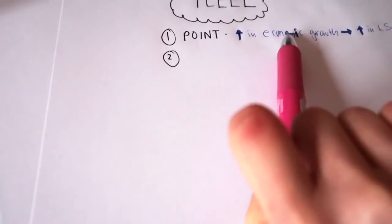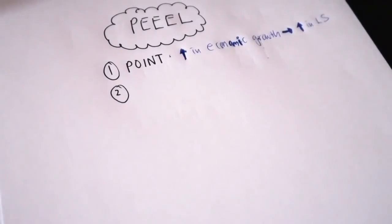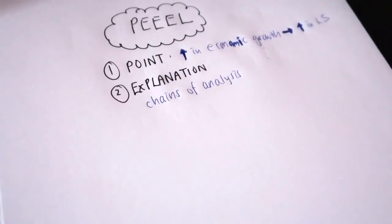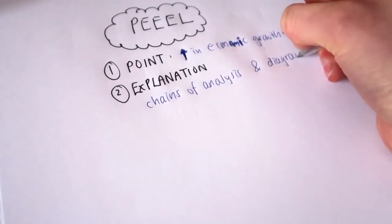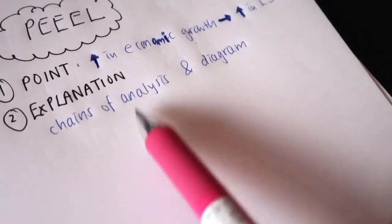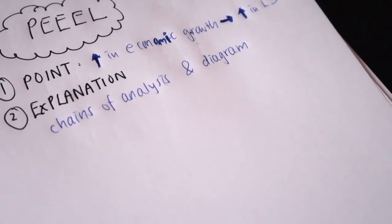If you don't explain your point, people won't know what you're talking about. So your next step is Explanation. In the explanation, you develop your chains of analysis. You can also include a diagram to supplement your chains of analysis, because in economics exams, examiners are looking for depth of analysis. You need to show you can develop chains of reasoning and avoid making mere assertions. Develop as many steps as possible — don't just say economic growth will improve living standards; explain how.